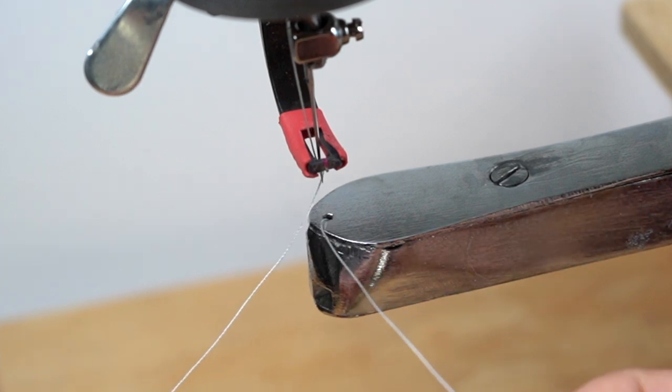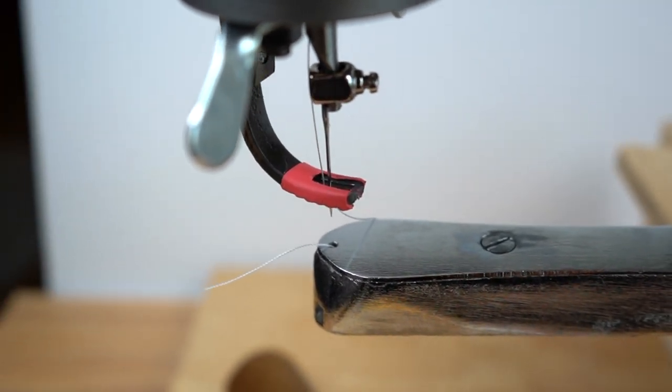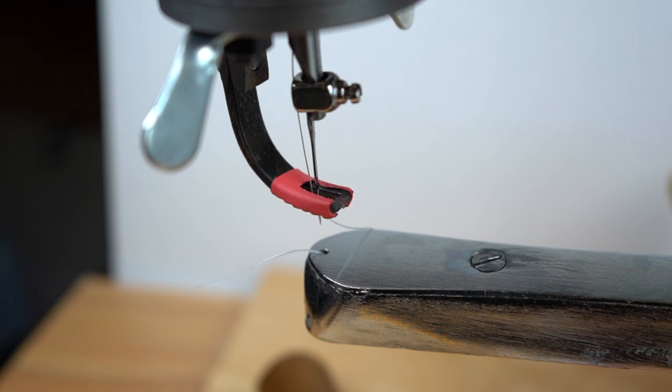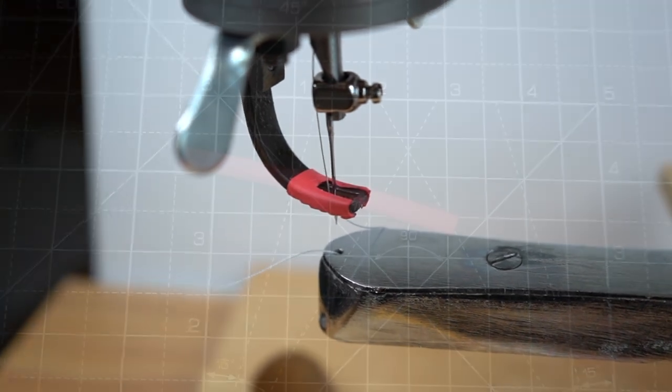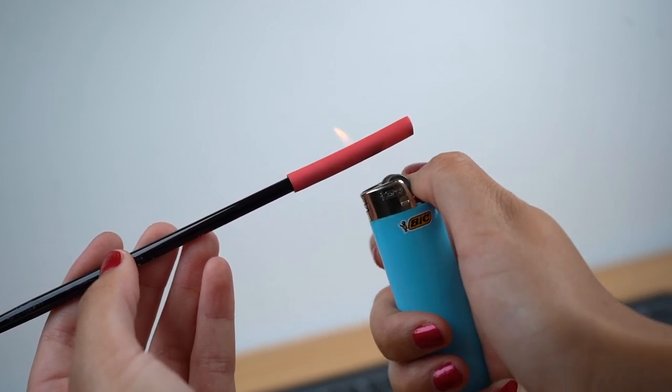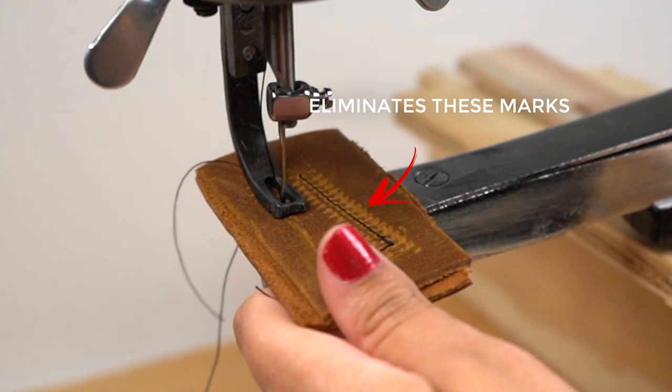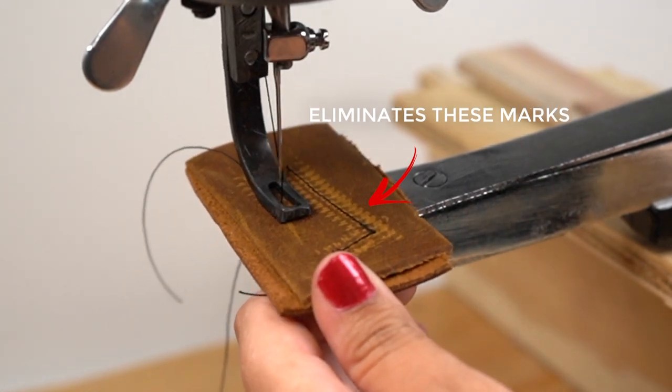You also might have noticed that I modified the presser foot by just putting some shrink tubing around it and then cutting a hole in the middle where the needle goes. The shrink tubing is awesome because when you hold a lighter to it it shrinks and morphs around the grooves and shapes of the presser foot. This just eliminates the presser foot making marks or indents on sensitive leather.